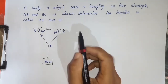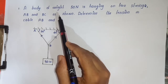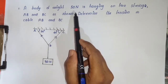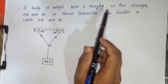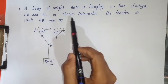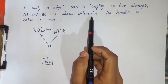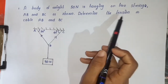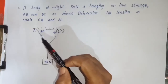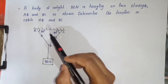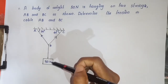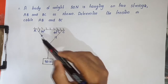Now we are going to look at the problem. A body of weight 50 N is hanging on two strings AB and BC, as shown. Determine the tension in cable AB and BC.